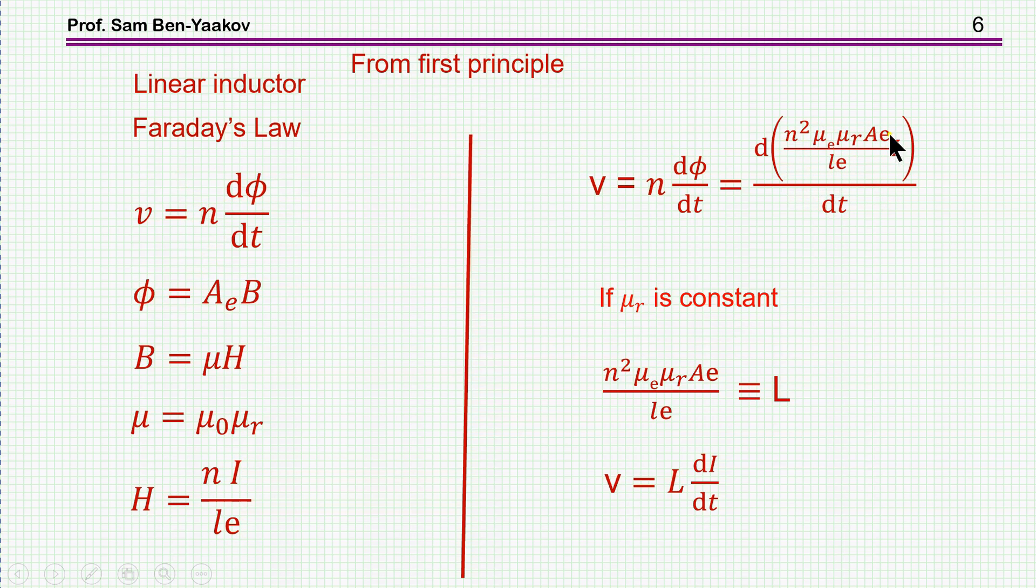Now, this term here is defined as the inductance. Since mu sub r, the relative permeability is constant for the linear inductor, we take this one out, and then we get a very well-known equation: V is L di dt. So, this is the linear case.